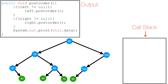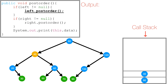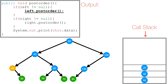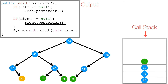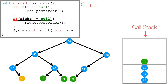Now let's look at the last depth-first search technique, known as post-order traversal. In post-order traversal, post means after — you visit the left, then the right, and finally the root. When we call post-order on our root, 80 gets pushed to the call stack. We check if 80's left is not null — it's not — so we call post-order on 80's left subtree. 40 gets pushed to the call stack. We check if 40's left is not null — it's not — so we call post-order on 40's left subtree. 20 is pushed to the call stack. 20's left is null, 20's right is not null, so we call post-order on 20's right subtree. 30 is pushed. 30's left and right are both null, so we print 30.